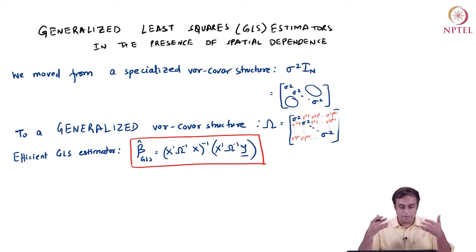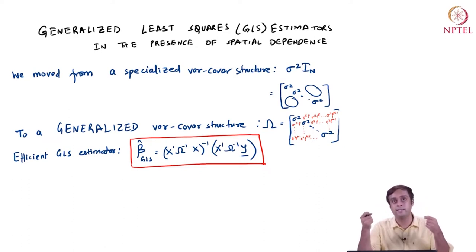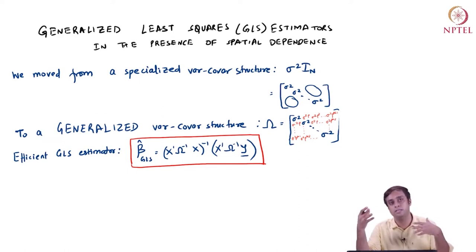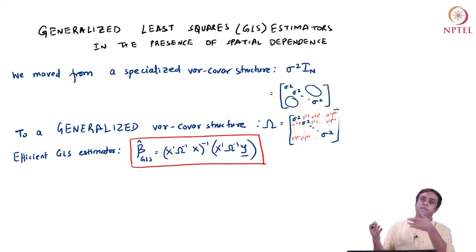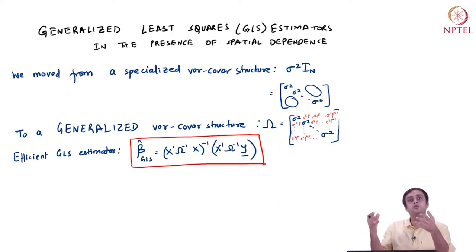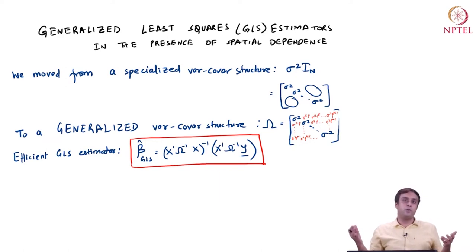In general, what we have done is move from a specialized variance-covariance structure for model errors — where the variance of each delta(s_i) is exactly the same, sigma squared, and the covariance between model errors at two different locations is zero — to a generalized variance-covariance structure where we introduced non-zero off-diagonal elements, which are the non-zero covariances between error factors at two different locations.